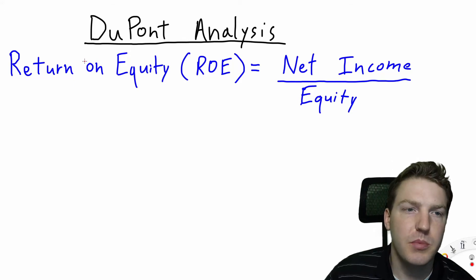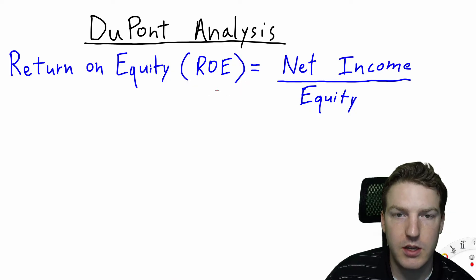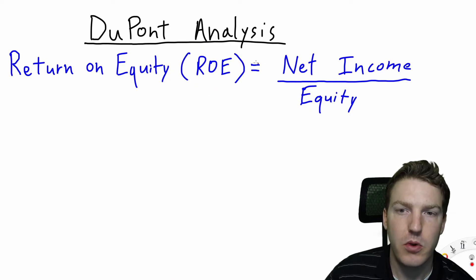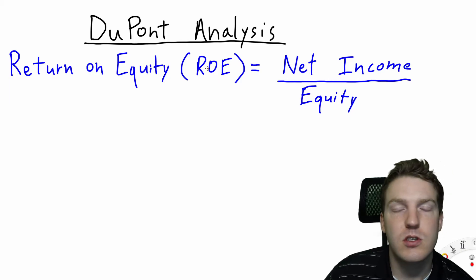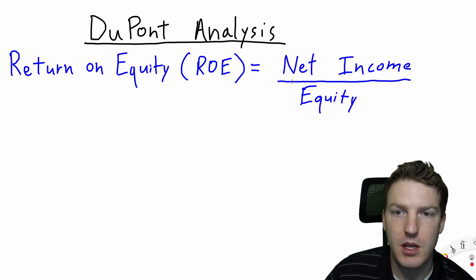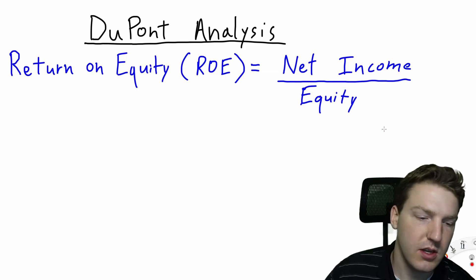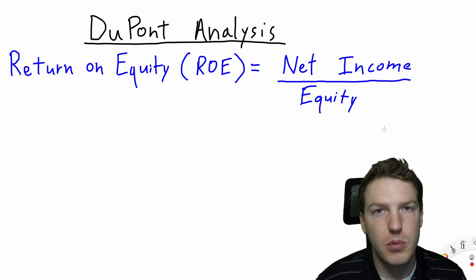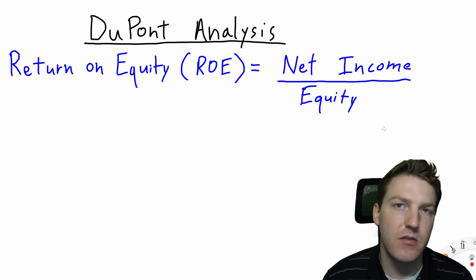The DuPont formula is simply a way to break out the return on equity, or ROE, of a stock into its separate components. The ROE is just an efficiency metric — it tells you how profitable a company is by giving you the net income of the company divided by the total equity, which essentially tells us what percentage of return the equity holders in this company are receiving for their investment.